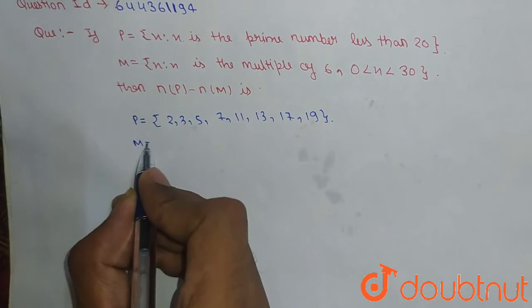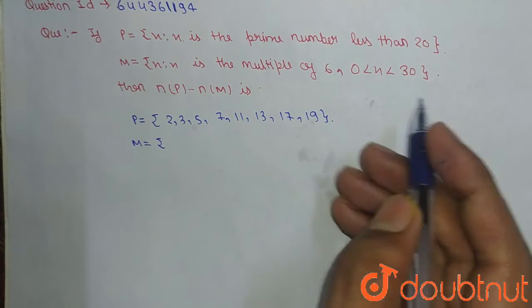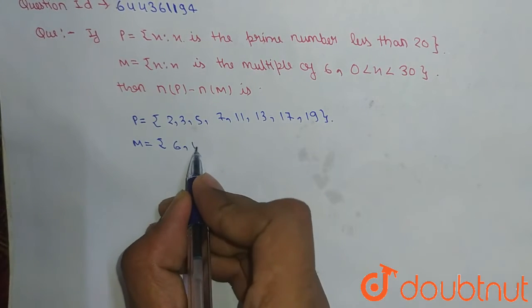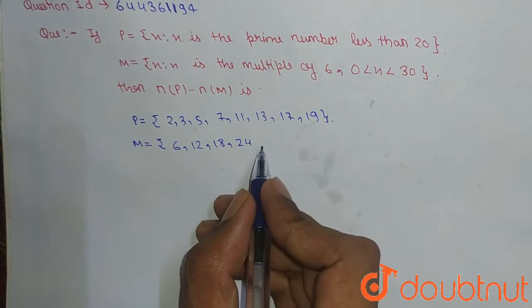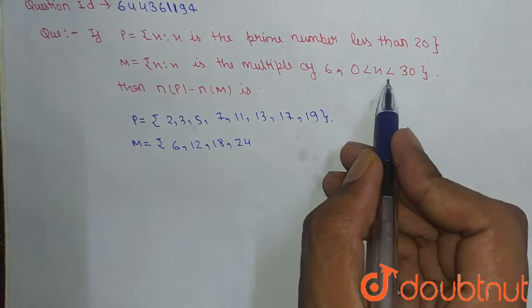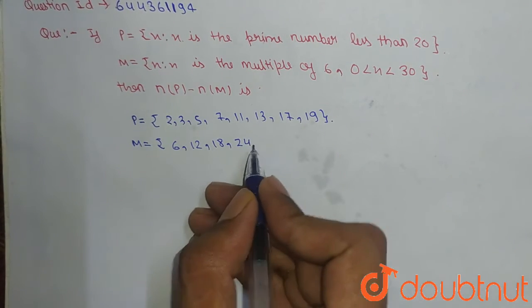Similarly, our M. M is X such that X is a multiple of 6 which is less from 0 to 30. So this will be 6, 12, 18 and 24. We will not consider 30 because there is no equal sign. So our M set will be 6, 12, 18 and 24.